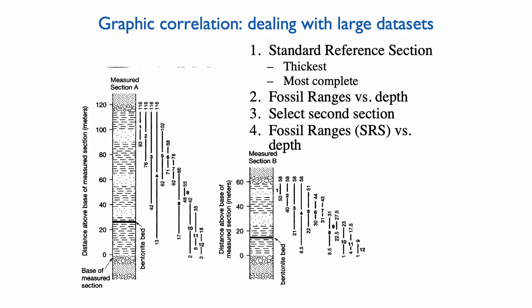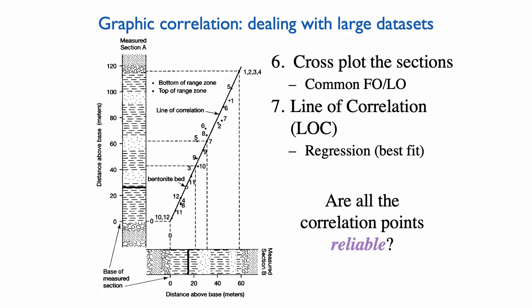So typically you will take your first section, known as the reference section, as the one that is thickest, so where you have the most sediment, and by extension hopefully the most complete. Then you plot the range of those fossils that you have versus depth, and you select your second section, and you also plot the range of those fossils versus depth. And then the graphic correlation comes when you plot one section against the other section.